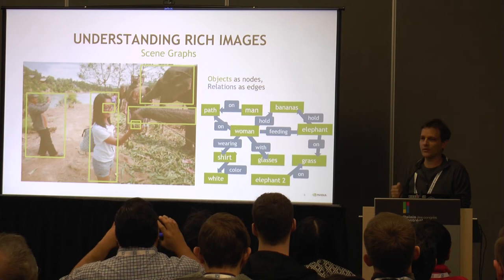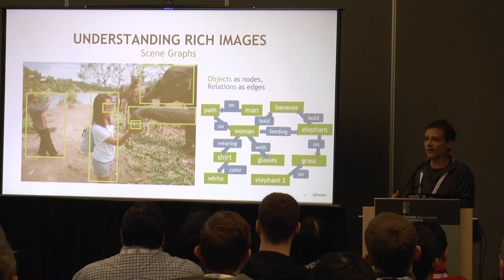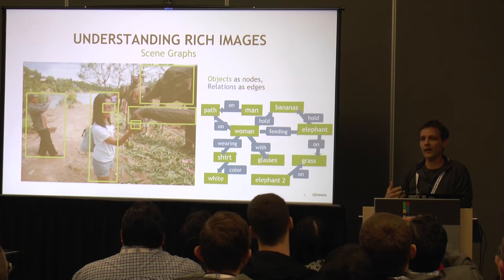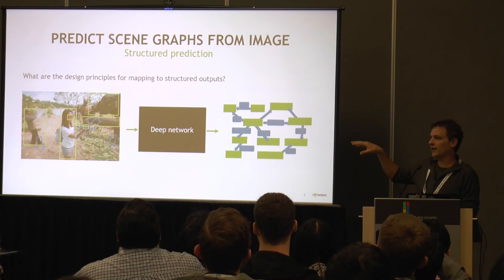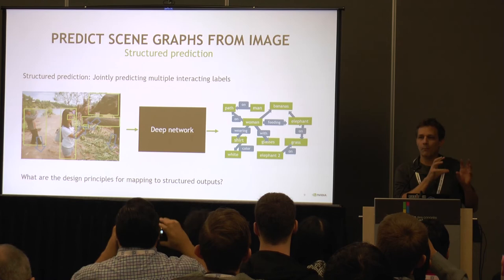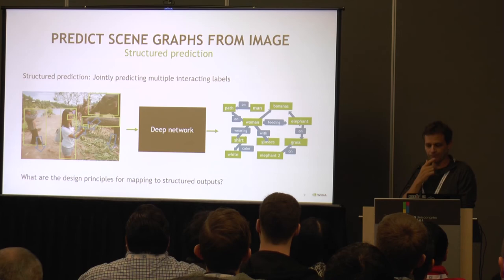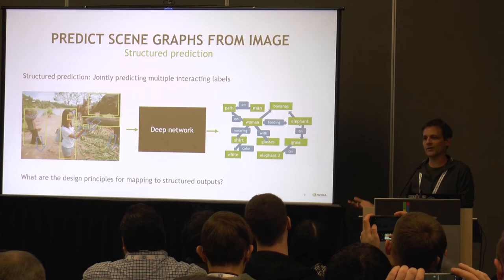If you have such a graph, there are a lot of questions you can answer — like who's feeding the elephant. There are a lot of questions you can ask once you have a good enough graph. What we want to do is develop techniques that take a set of boxes on images and create a graph. One of the main problems is predicting the actual labels of each of the boxes. In machine learning, this problem of predicting multiple labels jointly because they're interacting is called structure prediction.